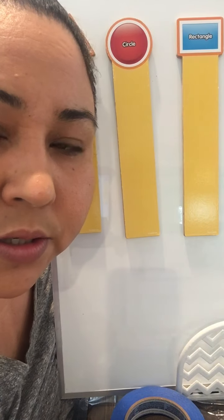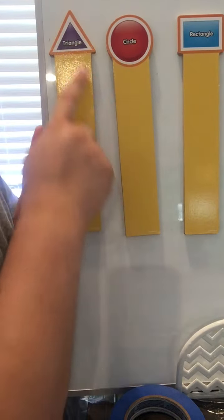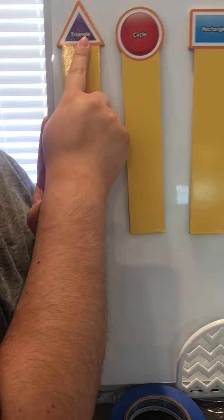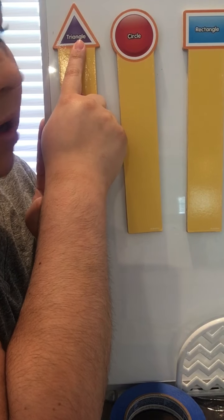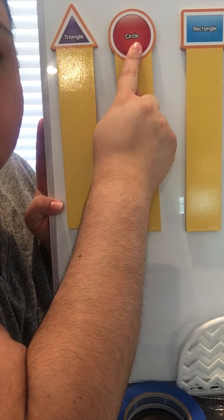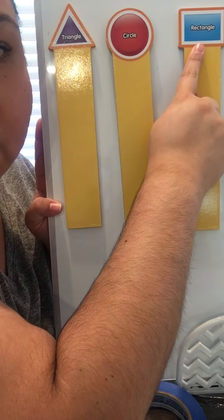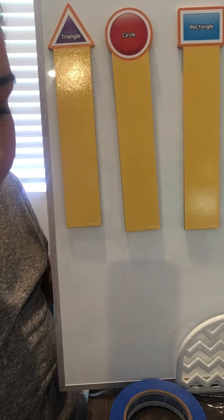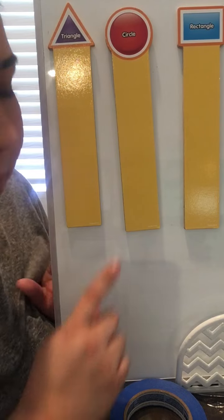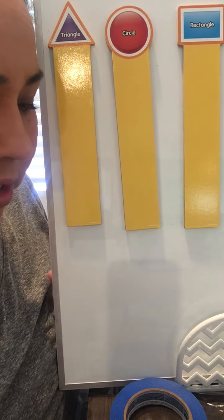Hi guys, today we are going to sort by shape. So let's see what shapes do we have. What shape is this? It's a triangle. And this one? Circle. Rectangle. And we are going to sort some objects by shape. So let's start.